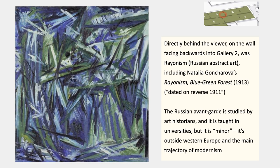The Russian avant-garde is studied by art historians and is a recognizable and expected specialty of larger art history departments — sooner or later, a department will want to hire an expert in Russian Cubo-Futurism or Russian avant-garde in general. But at the same time, it is part of the narrative while being minor, in part because it's outside of Western Europe and the main trajectory of modernism. It's also very close to the ideological values of modernism in the first couple of generations. So it's always included, but it's sometimes parenthetical.